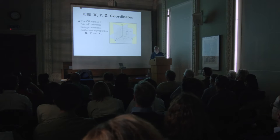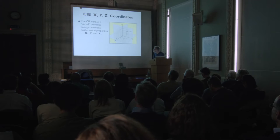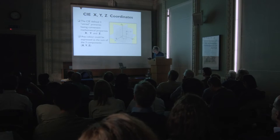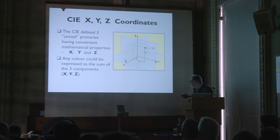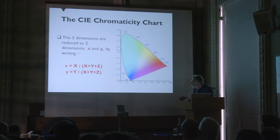And everybody's been baffled ever since. They call their primaries X, Y, and Z. Any color can be specified in terms of X, Y, and Z — those are capital X, Y, and Z. It's more convenient to express it on a flat sheet of paper, which they did by defining little x and little y. And of course you could have little z, which equals 1 minus little x plus little y. That fits on a flat sheet of paper, but it doesn't contain any information about the luminance, only what they called the chromaticity.